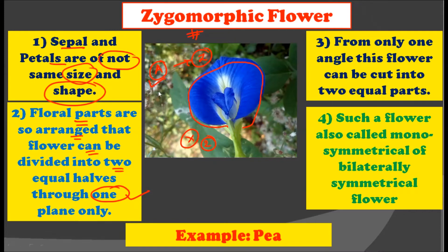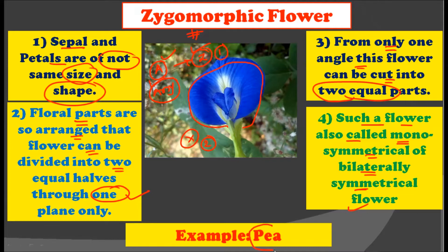This is the very basic difference between the actinomorphic flower and the zygomorphic flower — the actinomorphic flower can be cut into two equal halves from any plane, but the zygomorphic flower can only be cut into two equal halves from one plane only. Such flowers are also called as the monosymmetrical flower or bilaterally symmetrical flower. The example for the zygomorphic flower is the pea.